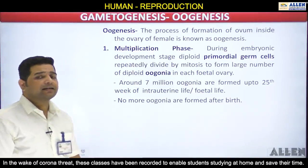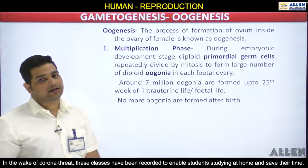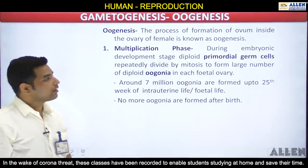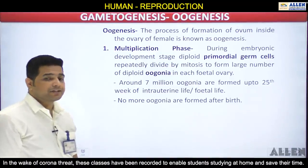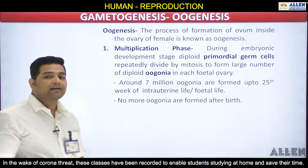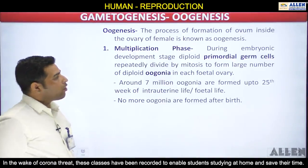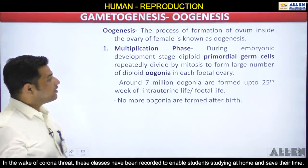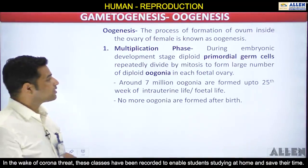Gametogenesis is divided into three phases: multiplication, growth, and maturation phase. During the multiplication phase of oogenesis, when the female is in its fetal development stage — during the embryonic development stage — the diploid primordial germ cells divide repeatedly by mitosis to produce a large number of smaller cells known as diploid oogonia in the fetal ovary.